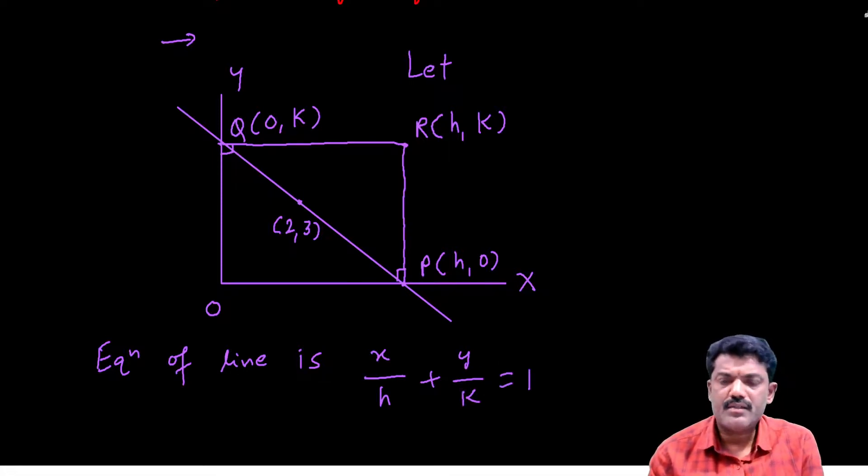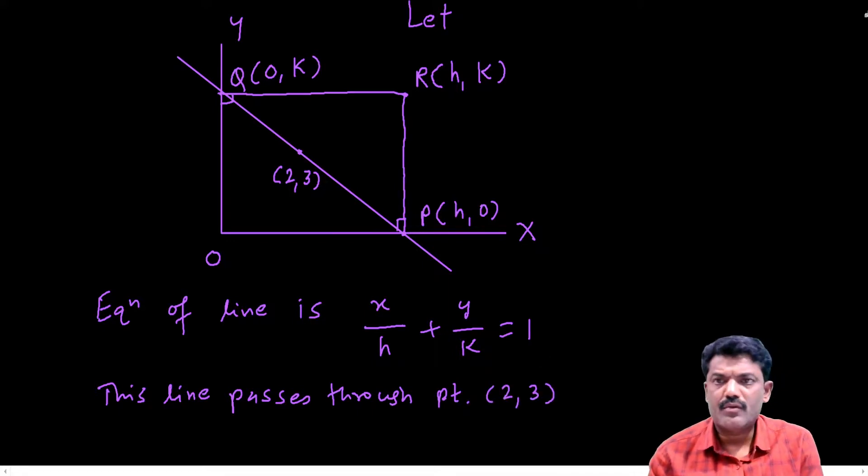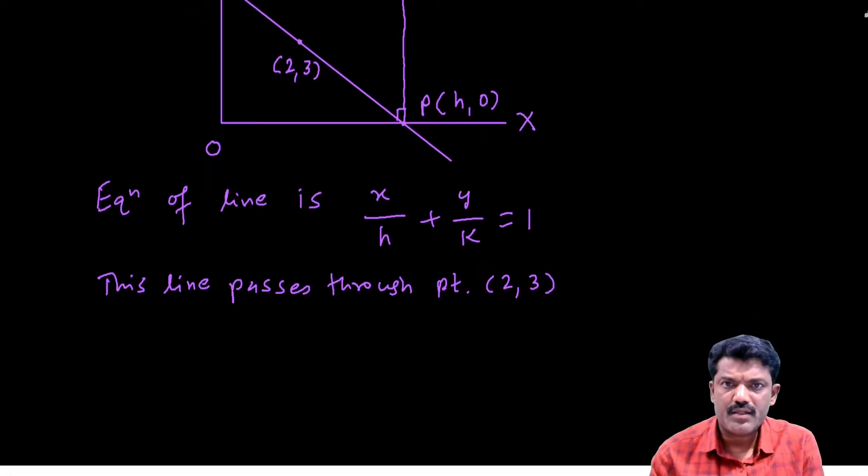But it is given that the line is passing through the point (2,3). This line passes through point (2,3), so this point will satisfy the equation of line.